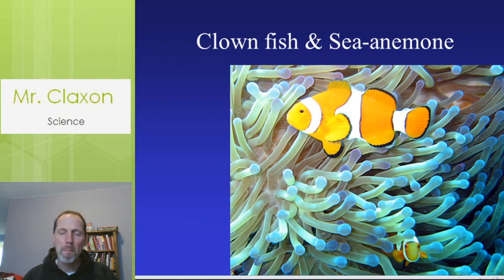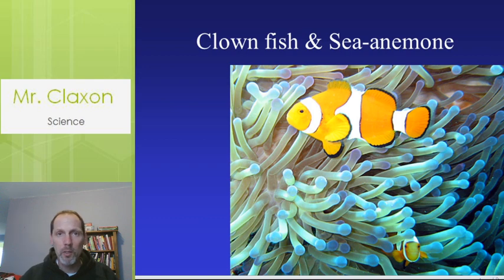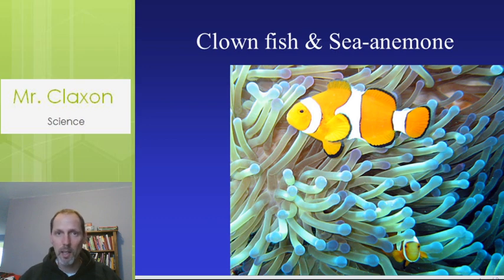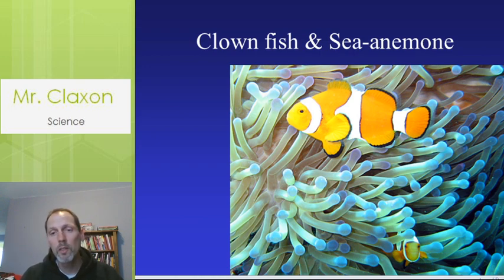Looking at mutualism, a good example is the clownfish and the sea anemone. Maybe you think of Finding Nemo — one scene I remember is before Nemo heads off to school, Marlin tells him to brush. He wasn't talking about his teeth though. Nemo brushes up against the sea anemone, and that's actually how he stays immune to the sting.